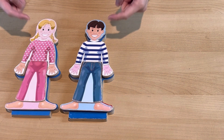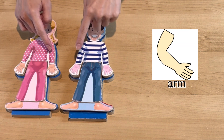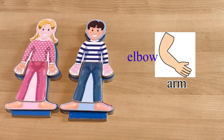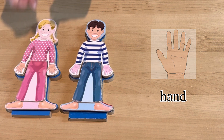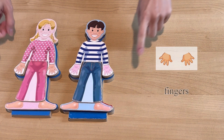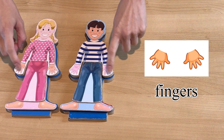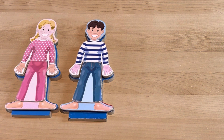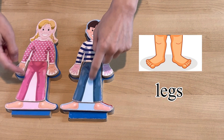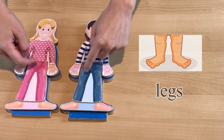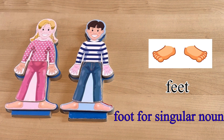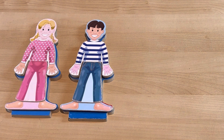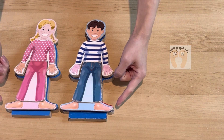We have our arms — two arms — hands, fingers, our legs, feet, and our toes.